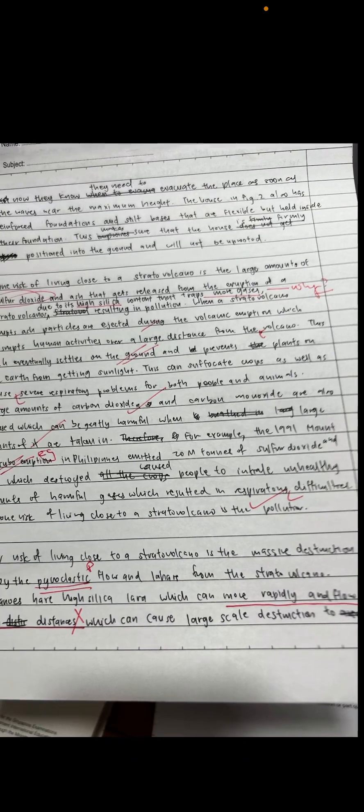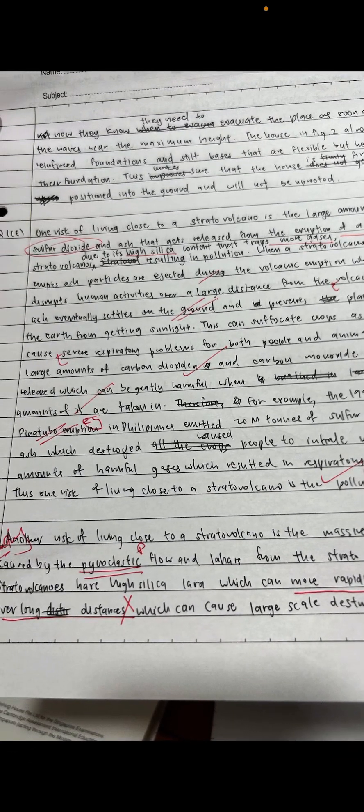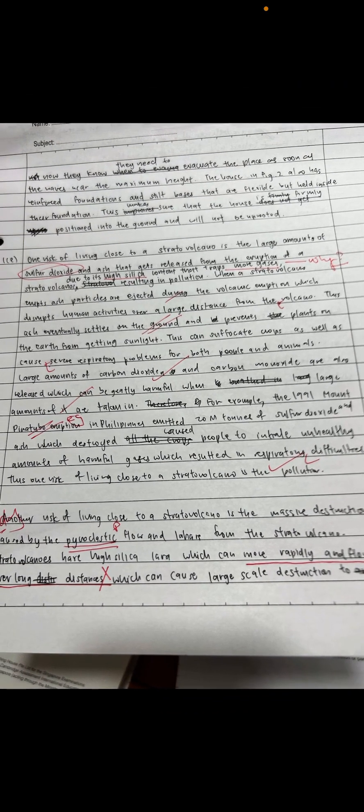What's important is that she mentions silica content and that it traps more gases — however, she leaves it at that. I need to see why higher silica content leads to trapping more gases and increased pressure. Is it because higher silica content means more viscous lava? What is the impact on flow, on solidification, and what happens when you have a volcanic plug forming on the vent or crater?